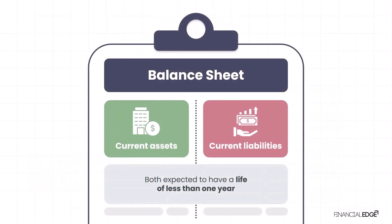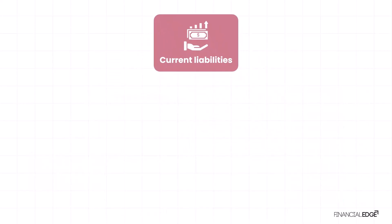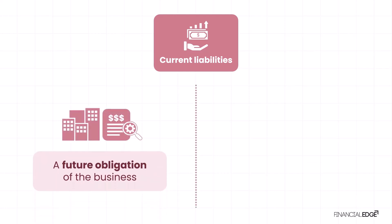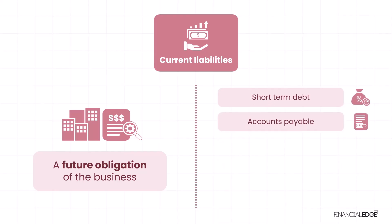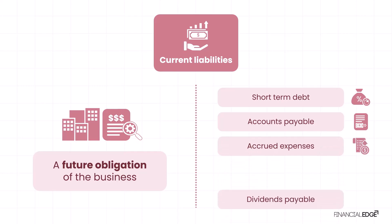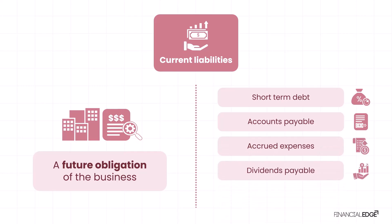Now let's look at current liabilities. Because they're a liability, they mean that there'll be a future obligation to the business. Examples include short-term debt, accounts payable, accrued expenses, dividends payable, and taxes payable.